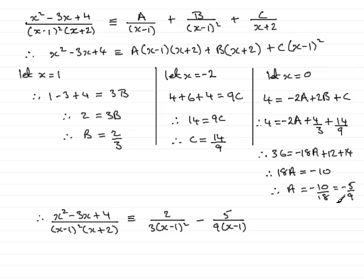Next, we have plus whatever C is, and C is 14 ninths. So that's going to be plus 14 over 9 lots of x plus 2. And so there we have our fraction expressed as partial fractions.